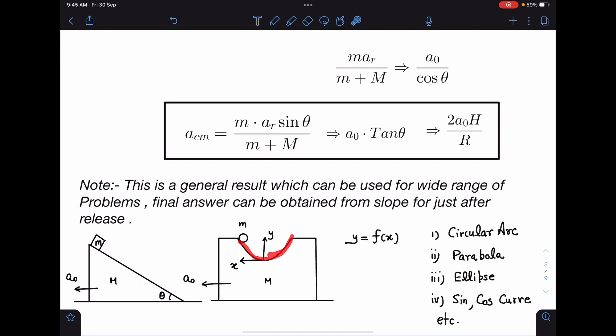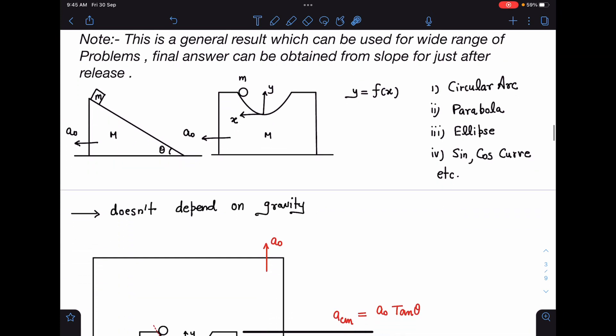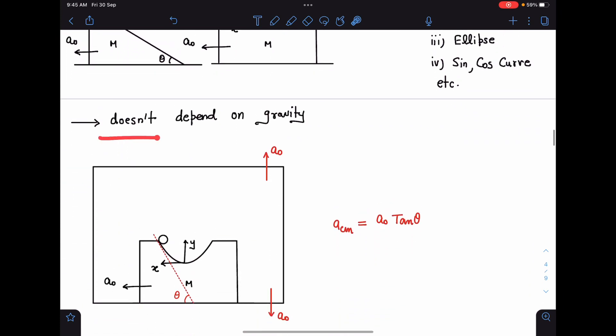In this case, result is going to be a₀tan θ. Just find the value of slope at the point of release. So this covers a lot of problems. Other than that, since it does not depend on gravity, we should not take this as a₀.